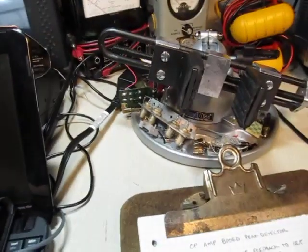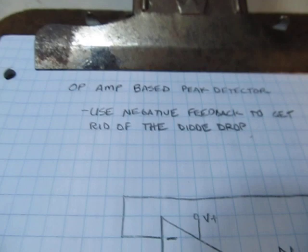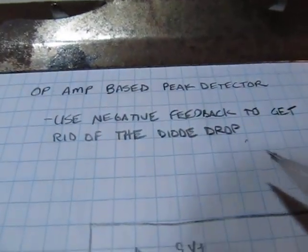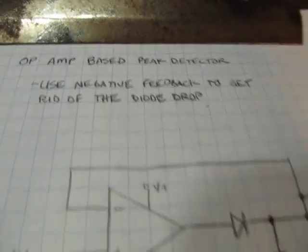So let's see how we can use an op amp to make our life easier. Let's see. We've got the op amp-based peak detector. The op amp-based peak detector uses the negative feedback of an op amp to get rid of that voltage drop. And here's how it works.